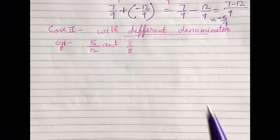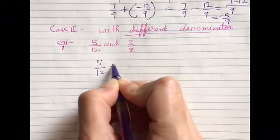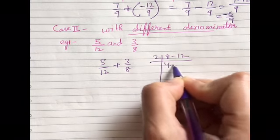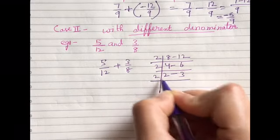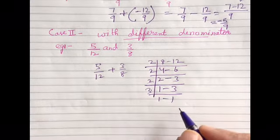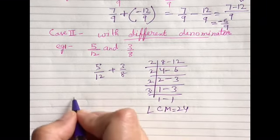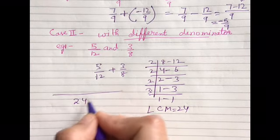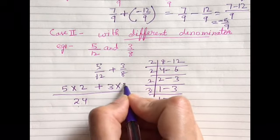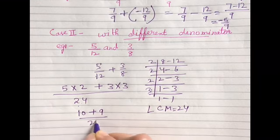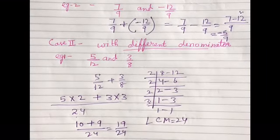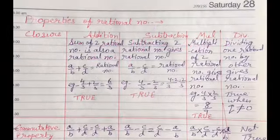For the second case — different denominators — like 5 by 12 plus 3 by 8, we first find the LCM of 12 and 8. The LCM will be 24. So 24 divided by 12 is 2, multiplied by 5 gives 10; and 24 divided by 8 is 3, multiplied by 3 gives 9. So it will be 10 plus 9 by 24, which is 19 by 24. In all these examples, we are using a combination of integer and fraction rules.